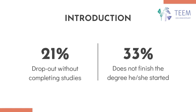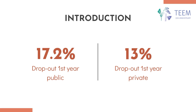21 percent of students who start an academic degree do not complete it, and 33 percent do not finish the degree they start. With focus on the first year, we can see that 17.2 percent of students drop out of the degree they start at the public university and 13 percent at the private university. This is a matter of concern in Spain, and there are many studies that identify and analyze the different factors that lead to students dropping out.